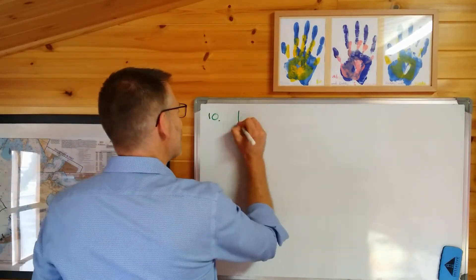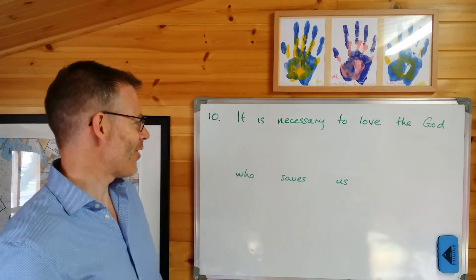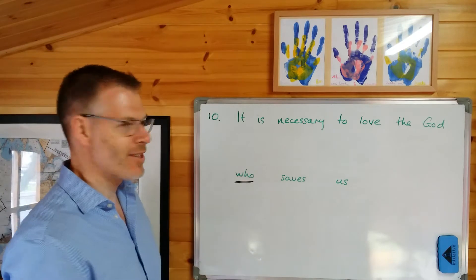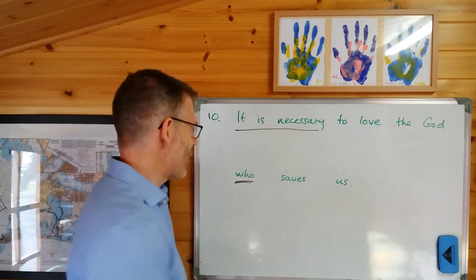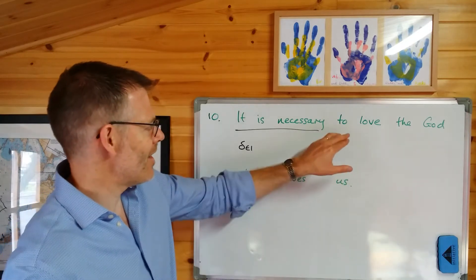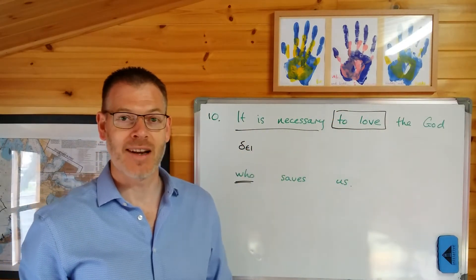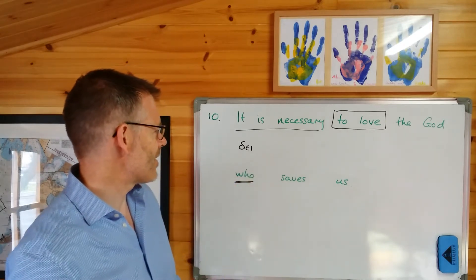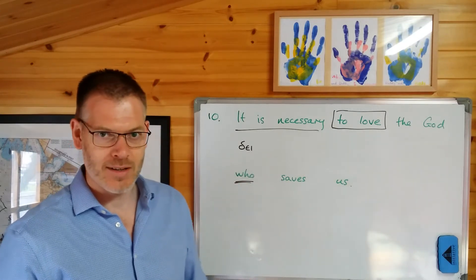Let's do the next example: "It is necessary to love the God who saves us." First identify the relative pronoun — there it is. "It is necessary" translates the little Greek word dei. It's often followed by an infinitive. The question is: do we want a present or an aorist infinitive? A present infinitive has an ongoing aspect, and here we want to say that loving the God who saves us is ongoing. So we want a present infinitive.